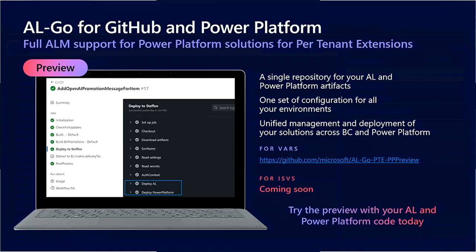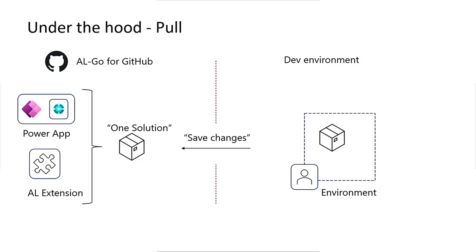What just happened: Anders was in his development environment, made a change to the Power App — you can do much more sophisticated changes, and also change your AL code. We take these changes and push or pull them to a centralized repository. Now let's look at the next step: how to take our updated asset and distribute it to different environments like customer environments.